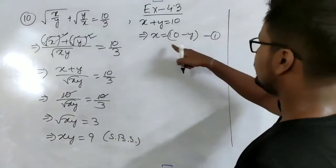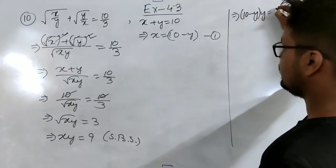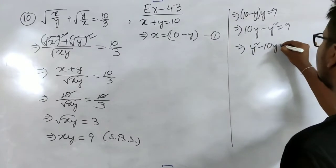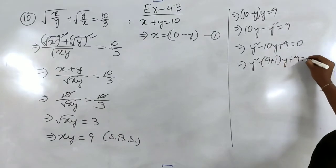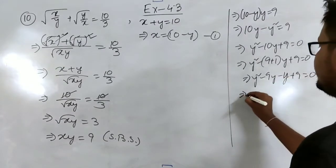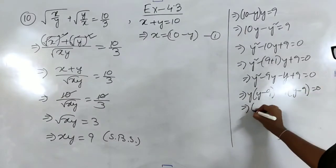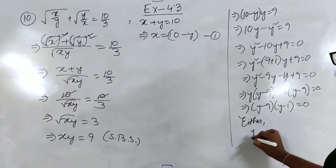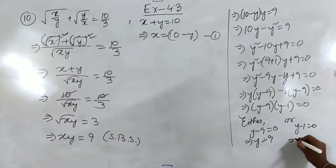Substituting x equal to 10 minus y into xy equal to 9 gives (10 minus y) times y equal to 9, which becomes y squared minus 10y plus 9 equal to 0. Factoring: y squared minus 9y minus y plus 9 equal to 0, giving y(y minus 9) minus 1(y minus 9) equal to 0, so (y minus 9)(y minus 1) equal to 0. Therefore y equals 9 or y equals 1.